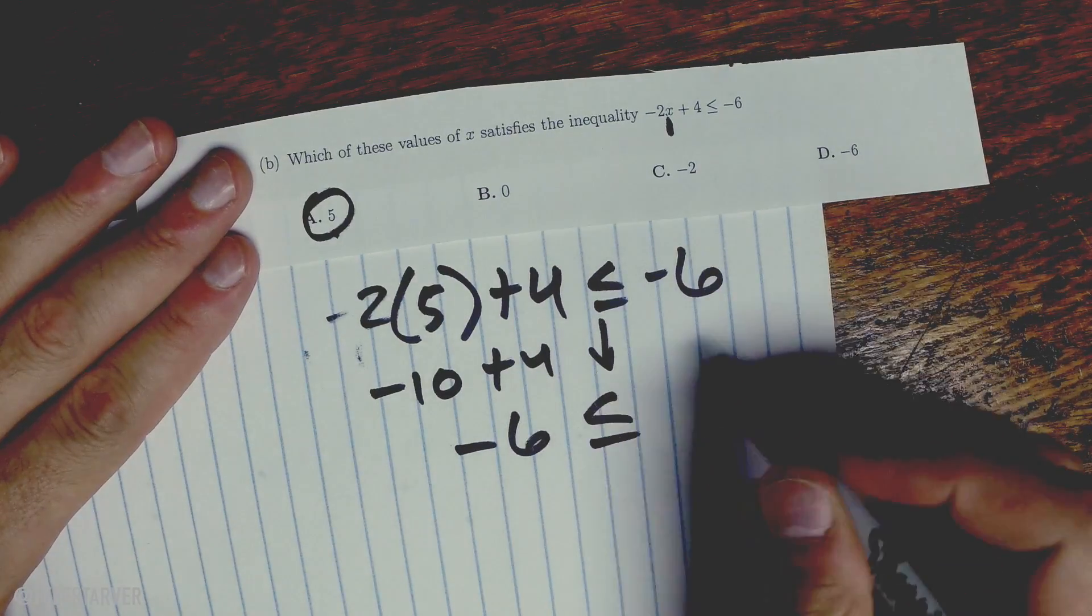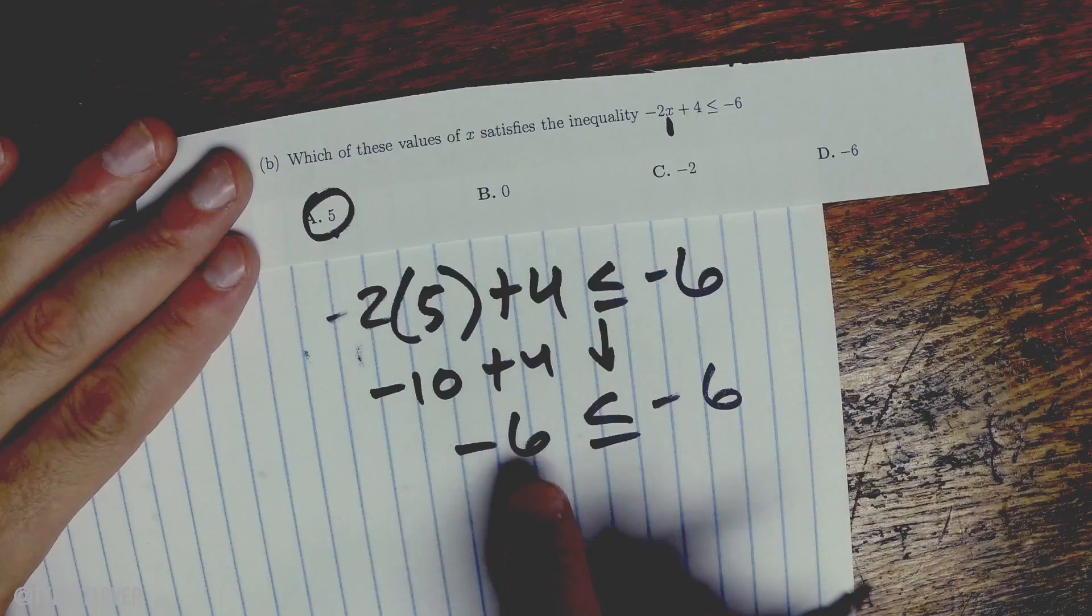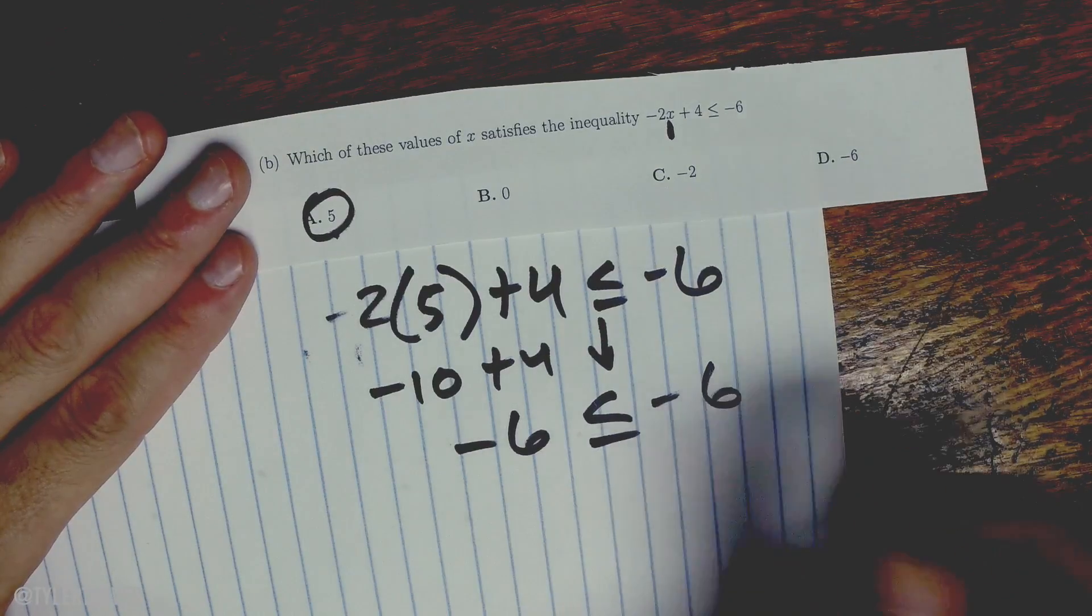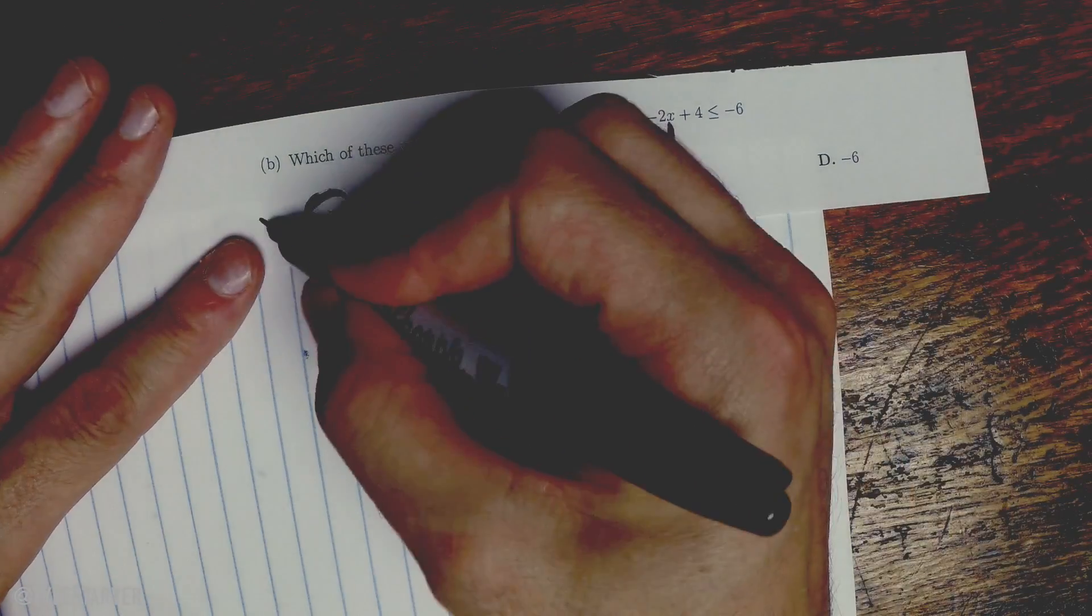Don't forget to bring everything down: is less than or equal to -6. Now is -6 less than or equal to -6? Yeah, it's equal to, so that one works.